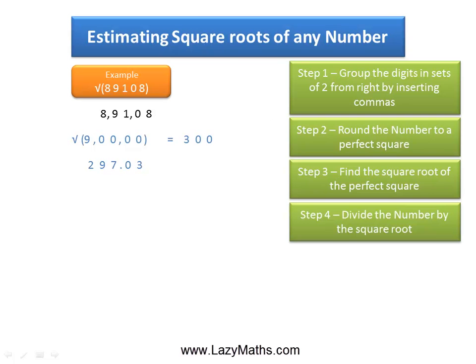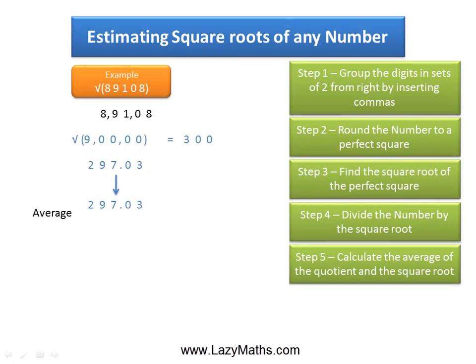And then we take the 297.03 and the 300 and we find the average of these two by adding them and dividing it by two to get the average value which is 298.51. And this average value is the approximate answer for the square root of 89,108.